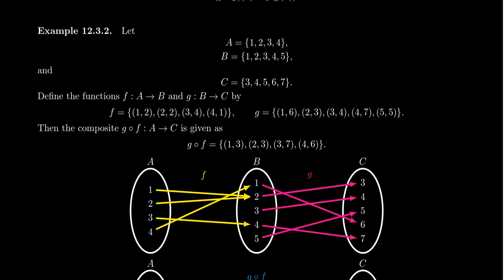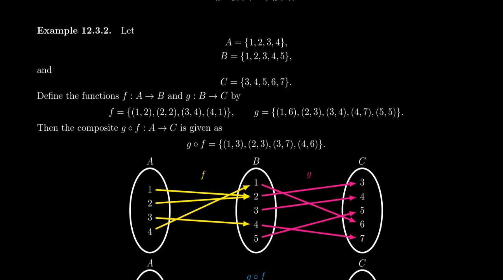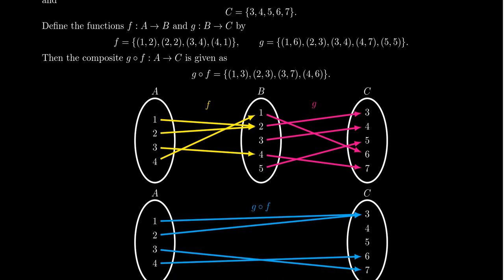Let's look at an example. Take A = {1, 2, 3, 4}, B = {1, 2, 3, 4, 5}, and C = {3, 4, 5, 6, 7}. Define F as a function from A to B where 1→2, 2→2, 3→4, 4→1 — we've seen this exact function before. Define G as a function from B to C where 1→6, 2→3, 3→4, 4→7, and 5→5. We'll illustrate both of these functions simultaneously on screen.